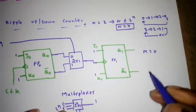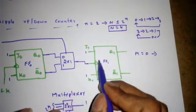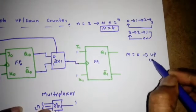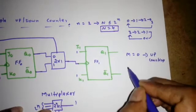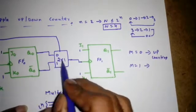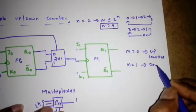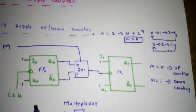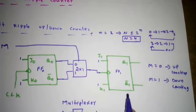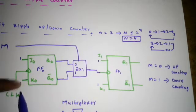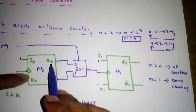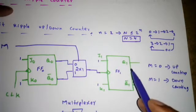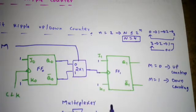When M=0, Q0 goes to the next flip-flop's clock, so it performs up counting. When M=1, Q0-bar goes to the next flip-flop's clock, so it performs down counting. That's it — depending on the control input, the circuit does up or down counting. On each negative clock edge, Q0 toggles, and Q1 follows accordingly.